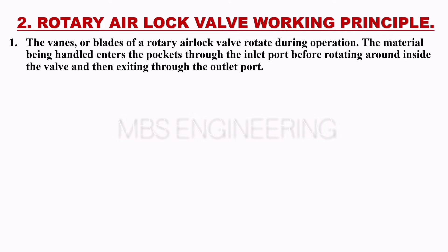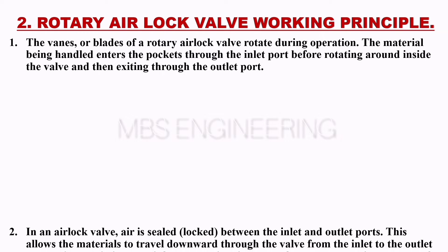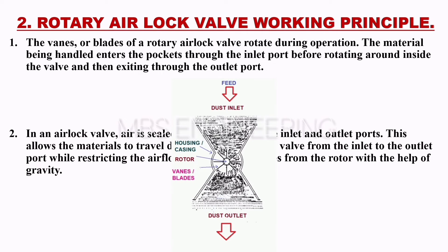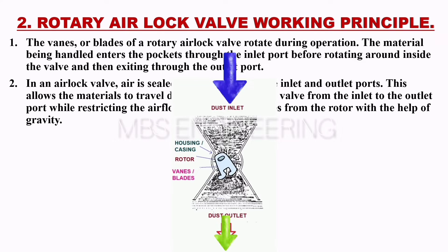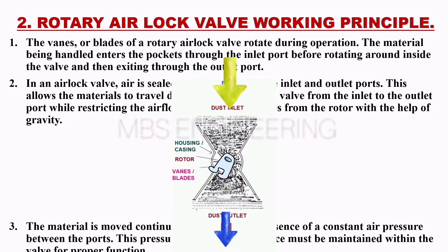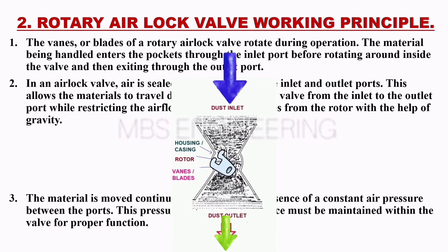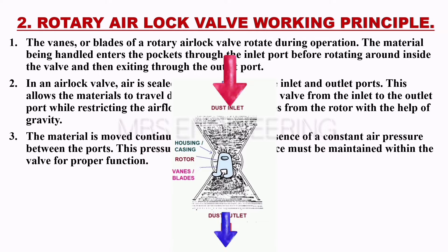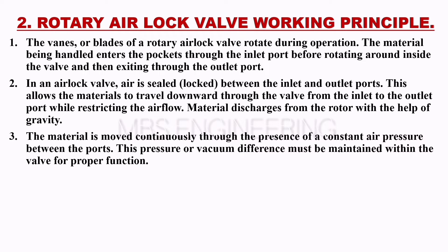Regarding the working principle: the vanes or blades of a rotary airlock valve rotate during operation. The material enters the pockets through the inlet port, rotates around inside the valve, and exits through the outlet port. In an airlock valve, the air is sealed and locked between the inlet and outlet ports. This allows materials to travel downward through the valve from inlet to outlet while restricting airflow.